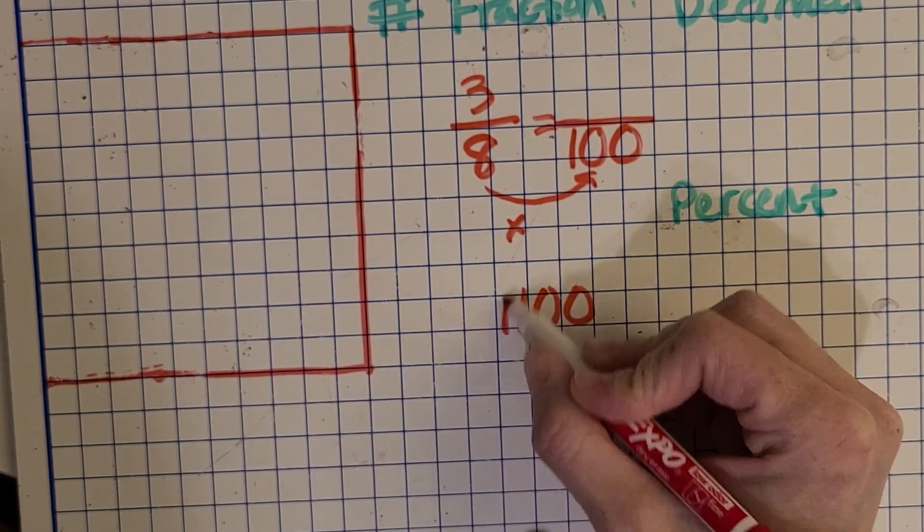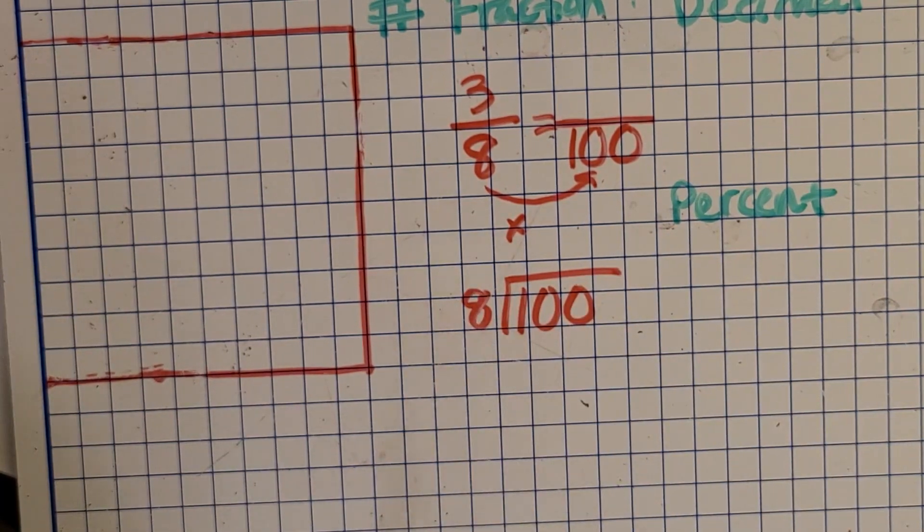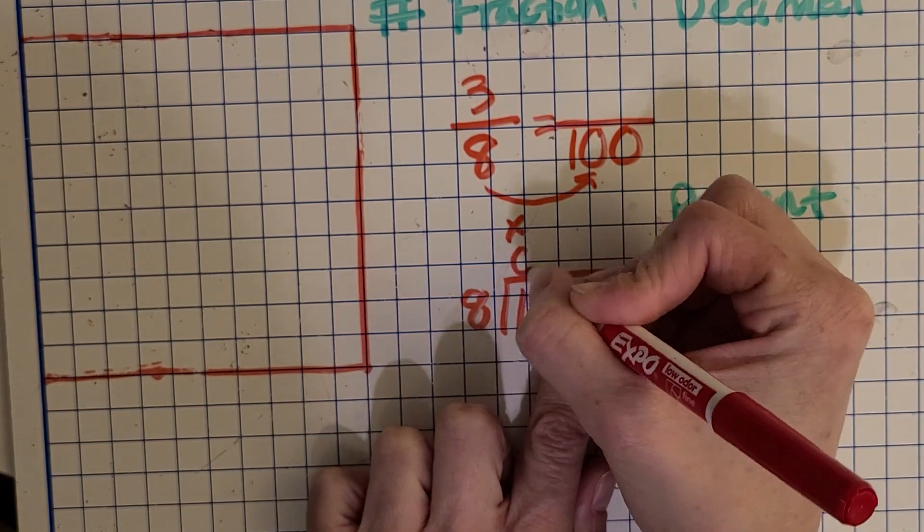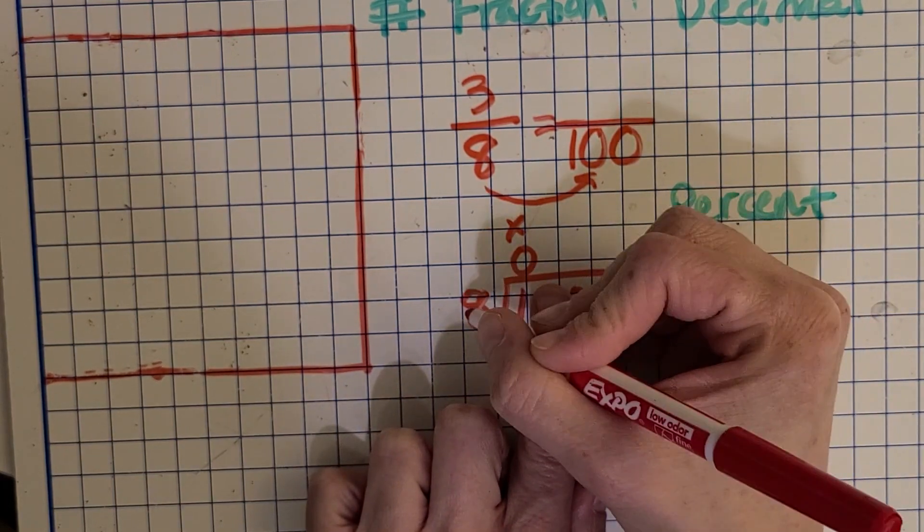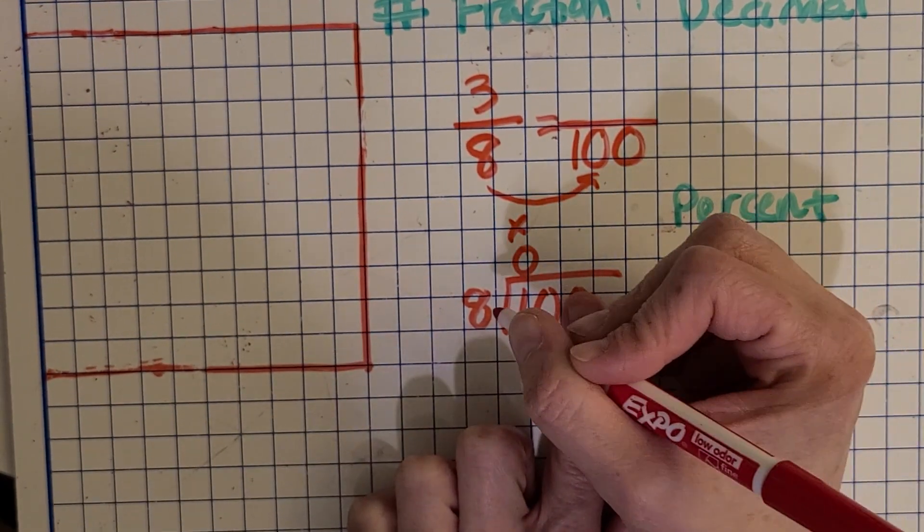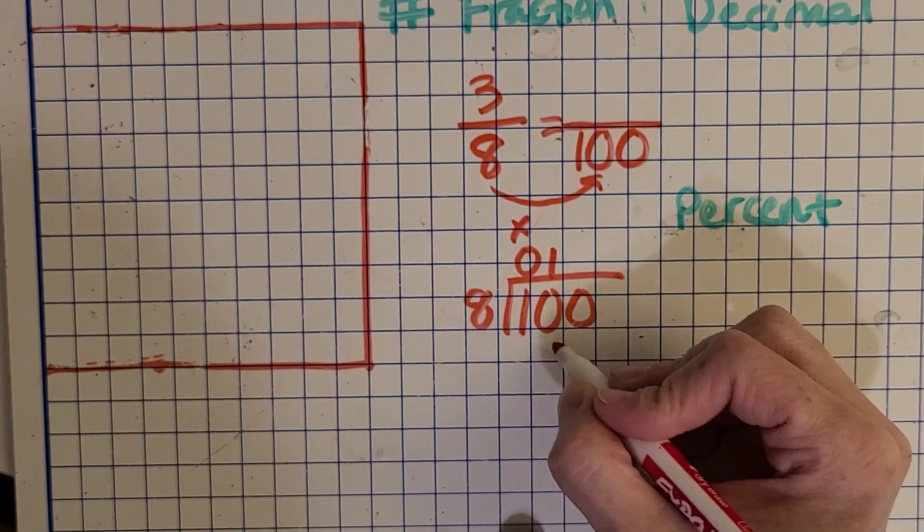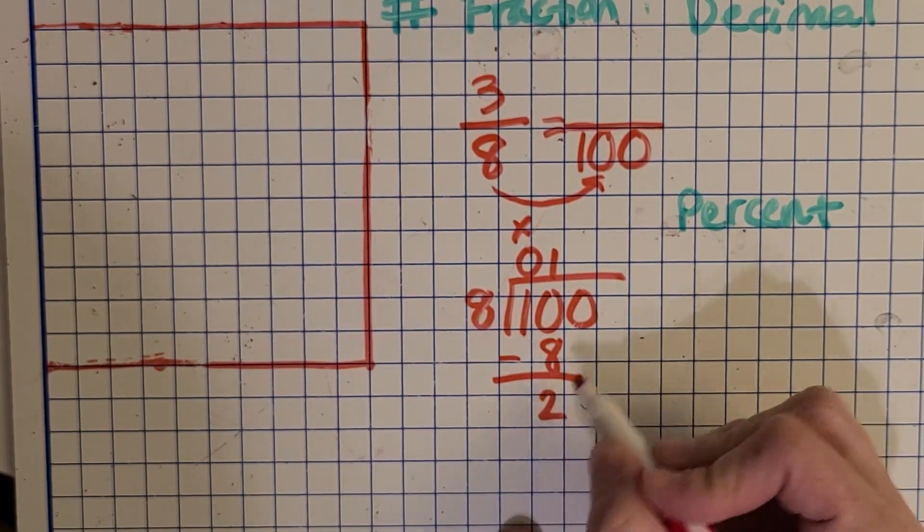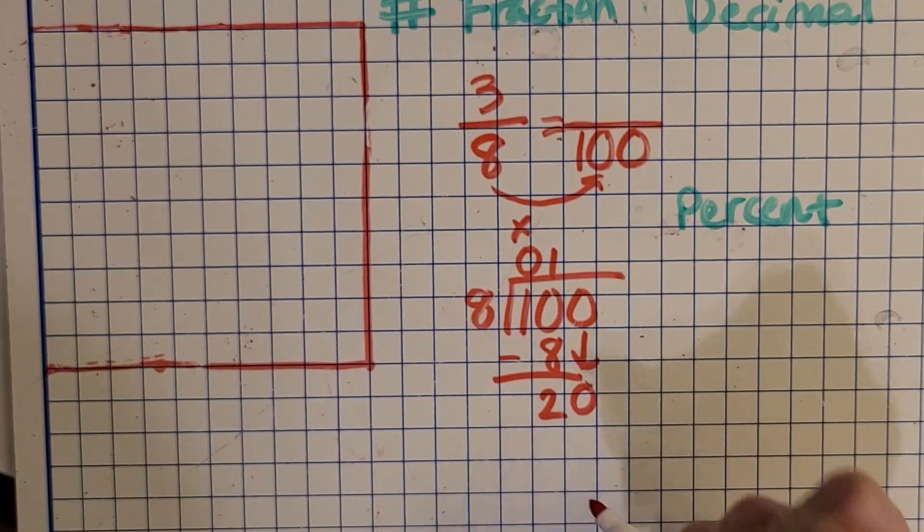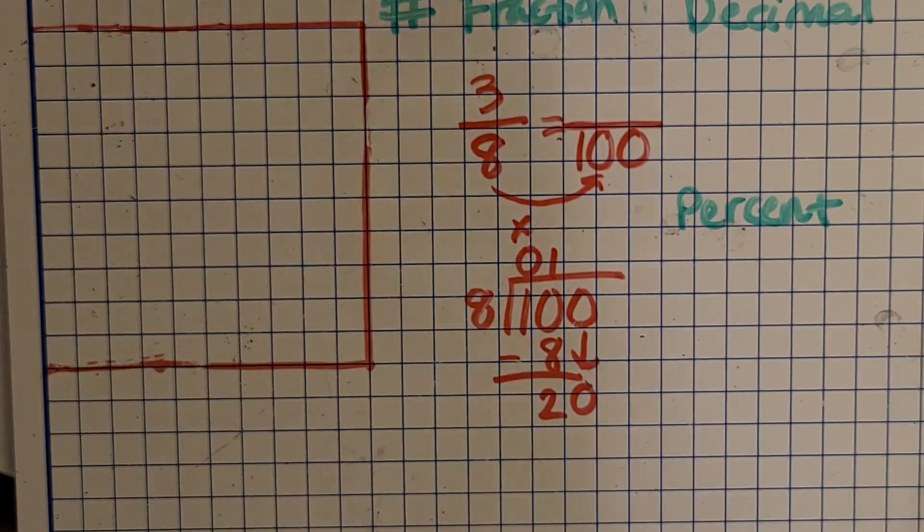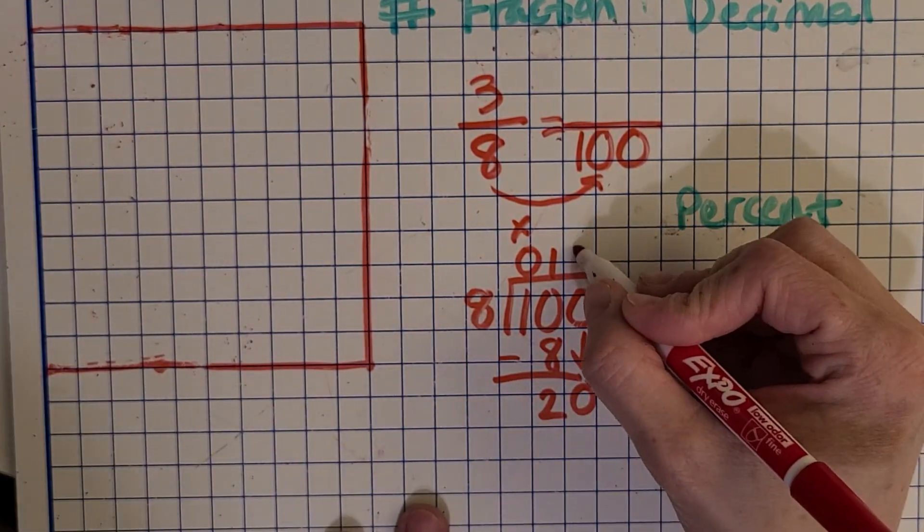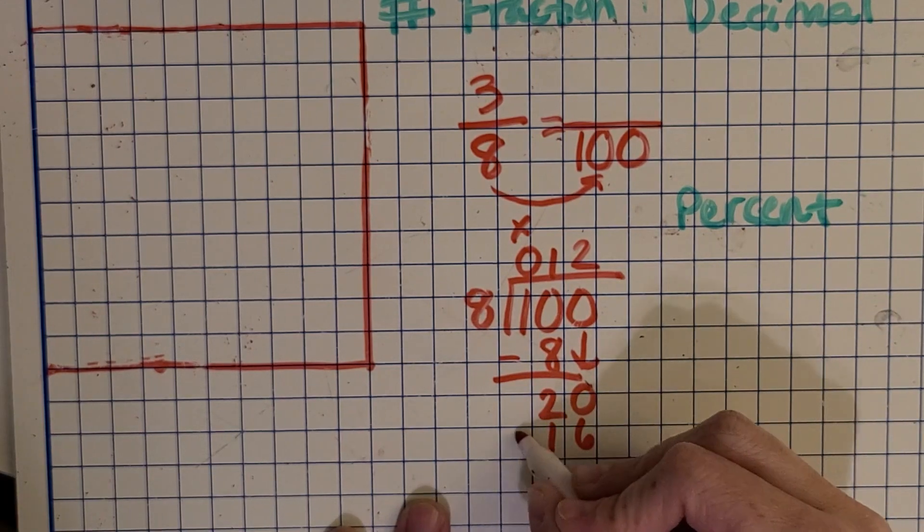So let's set that up down here. I want you to pause the video and do this division problem. So I'm getting a zero here because one is too small to make a group of eight. And then I just like to move my finger over. So how many groups of eight can I make with 10? Yep, just one. Eight times one is eight. Subtract and bring down. And then how many groups of eight can I make with 20? Two. Eight times two is 16. Subtract.